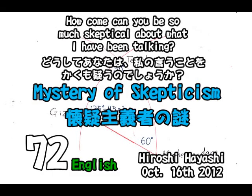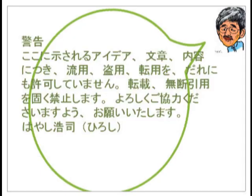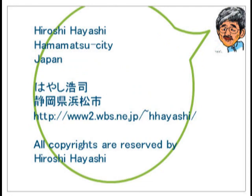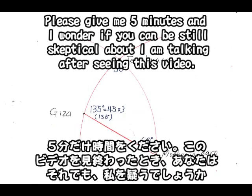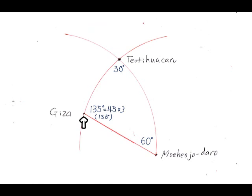Good morning, this is Hiroshi Hayashi, Hamamatsu, Japan. I'd like to explain and give you guidance on the mysterious lines of ancient times. Give me 5 minutes — there are many skeptical people who are skeptical of what I'm saying, but I'll explain a little bit about that.